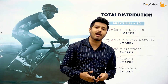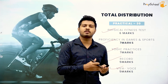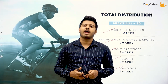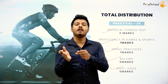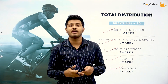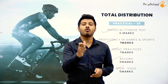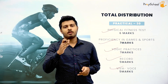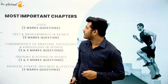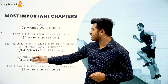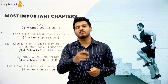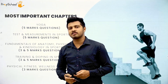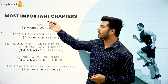Now let's look at what chapters are covered in theory. Based on analysis of old question papers, I have divided the chapter list into two categories to help you study efficiently: most important chapters and moderately important chapters. Most important chapters will have five-mark and three-mark questions, while moderately important chapters will have one-mark and three-mark questions.